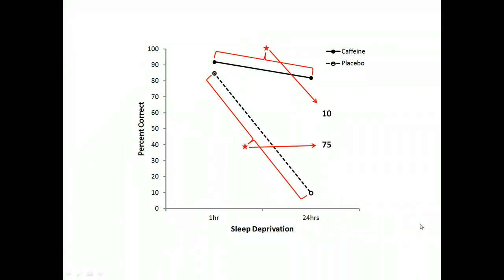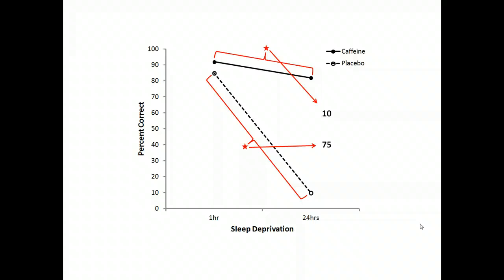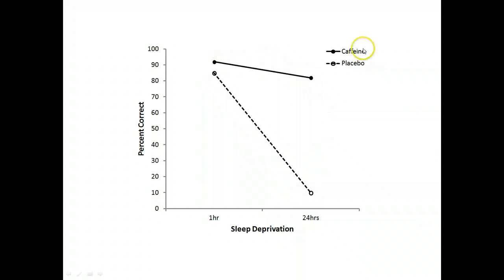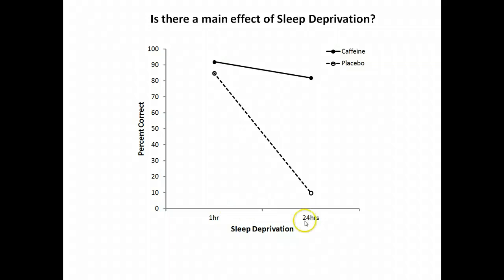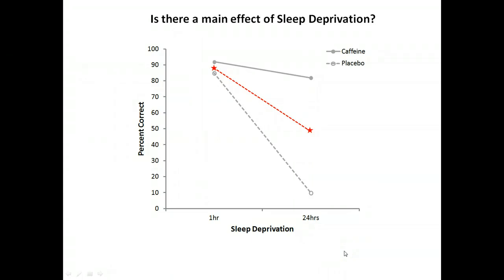Let's quickly work through this example again from the beginning. One group received caffeine, another received placebo, and participants were tested at either one hour or 24 hours of sleep deprivation. We first asked whether there was a main effect of sleep deprivation: a main effect examines performance across the levels of the factor of interest whilst ignoring the other factor. We find the average performance at one hour, the average performance at 24 hours, and ask whether these two are different. We can see there is a main effect of sleep deprivation — performance drops with 24 hours of deprivation.